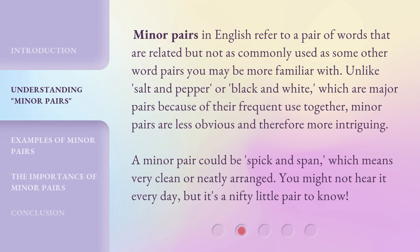A minor pair could be spick and span, which means very clean or neatly arranged. You might not hear it every day, but it's a nifty little pair to know.